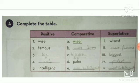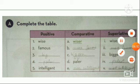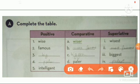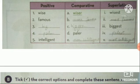Using the knowledge given, complete this table. Wise in comparative becomes wiser and in superlative becomes wisest. Famous — just like intelligent and grateful — these are qualities of people, so they become more famous and most famous. We do not add -er or -est here. Big becomes bigger and biggest. Pale becomes paler and palest. Intelligent again is a quality, so it becomes more intelligent and most intelligent.